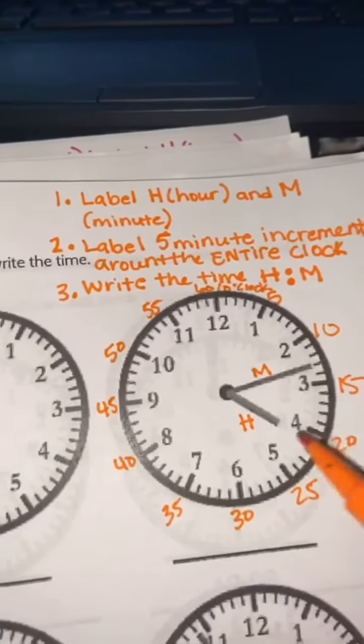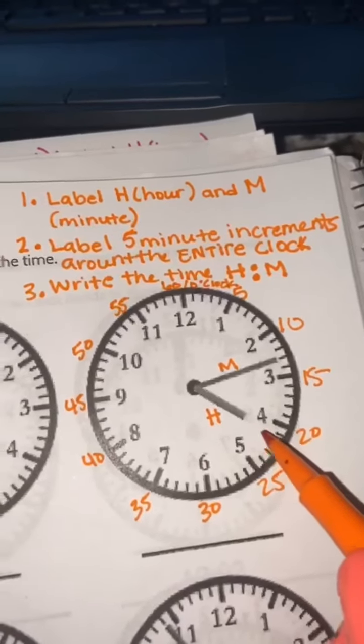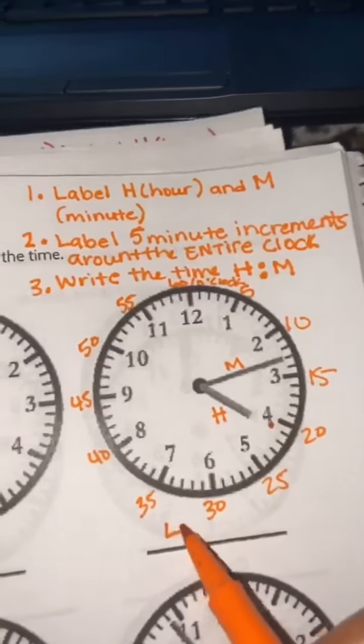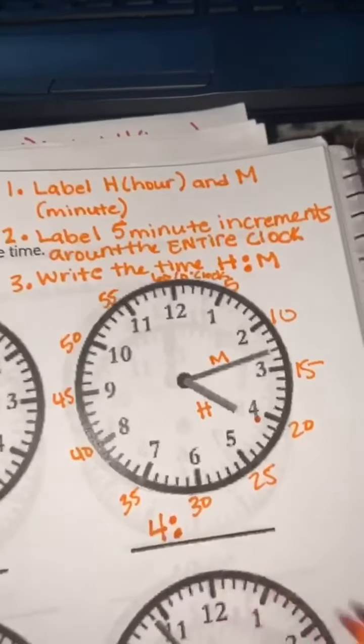Now, you're going to write our time. I know that my short hand is coming between the four and the five. I'm going to lean back, so my hour is four. Write your hour, four, and your dots.